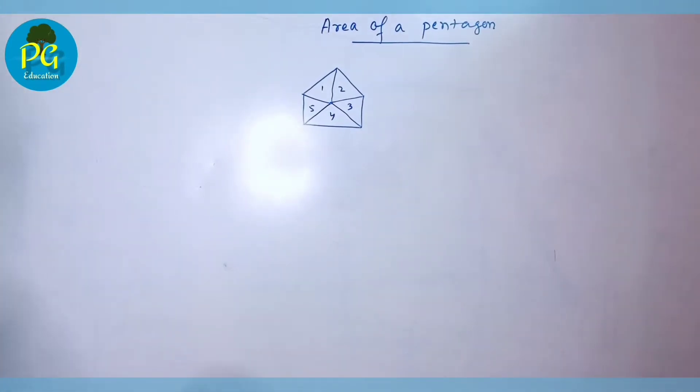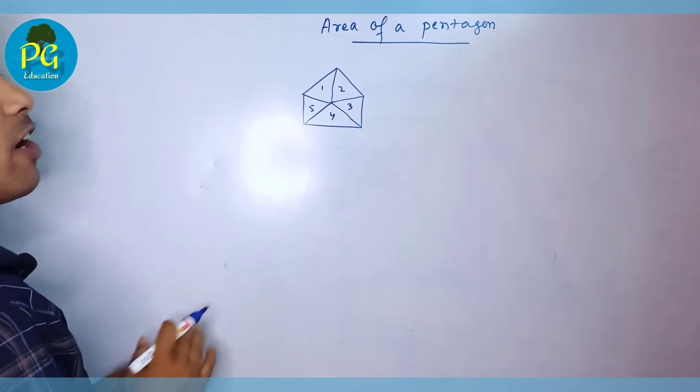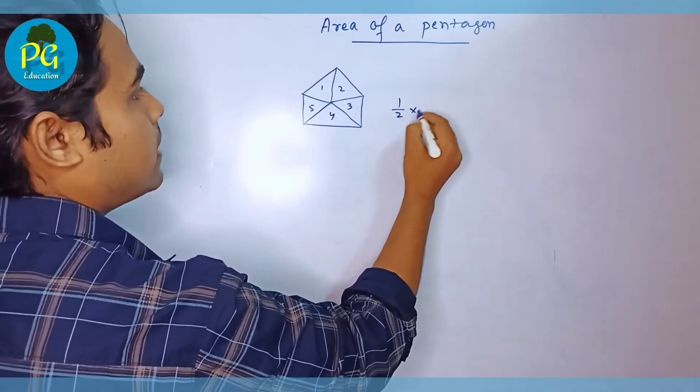Now you look, we know that area of any triangle is half into base into height.